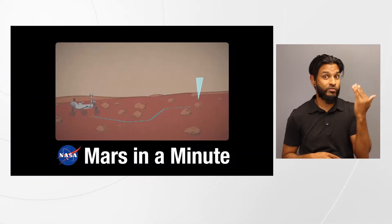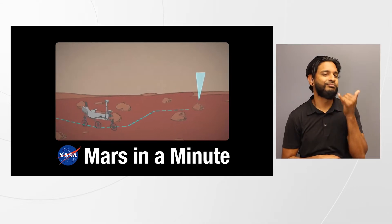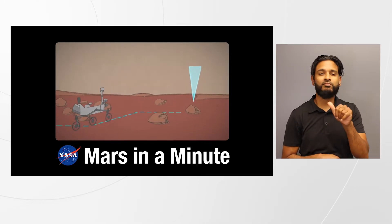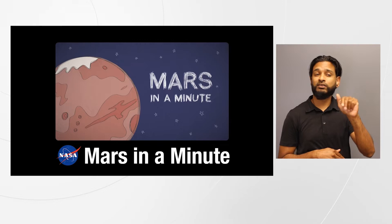Edge the students into the answer — computer programming — by asking if the students could do that with a joystick. Human error is another clue that you can give your students. Computers don't make mistakes. Another great resource for students is NASA's Jet Propulsion Laboratory's Mars in a Minute videos.